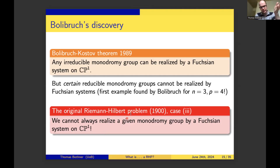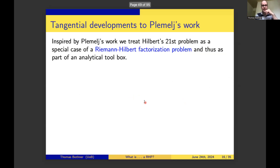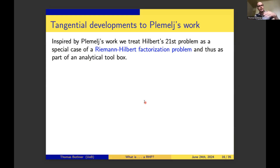André Bolibruch did this in 1989, lectured on these results also at an International Congress of Mathematics in 1994—94 years after Hilbert—and sadly passed away soon after. Now I will follow developments tangential to Plemelj's work, because the techniques he used in his almost-solution showed up reappearing in problems related to integrable systems techniques in the 1960s and 1970s. Those problems really gave rise to Riemann-Hilbert factorization problems and a whole toolbox around them.